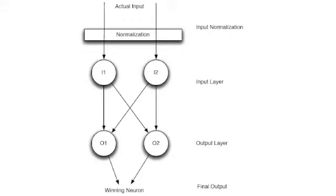You can see that there are really two layers: the input layer and the output layer. Some texts will refer to the normalization layer as a layer and actually call this a three-layer neural network. However, this is just different terminology used to describe the network.